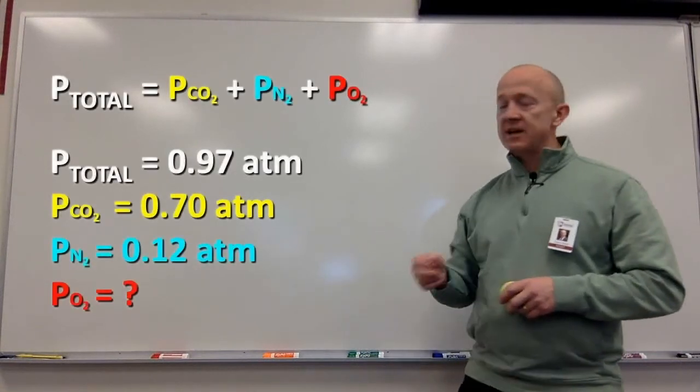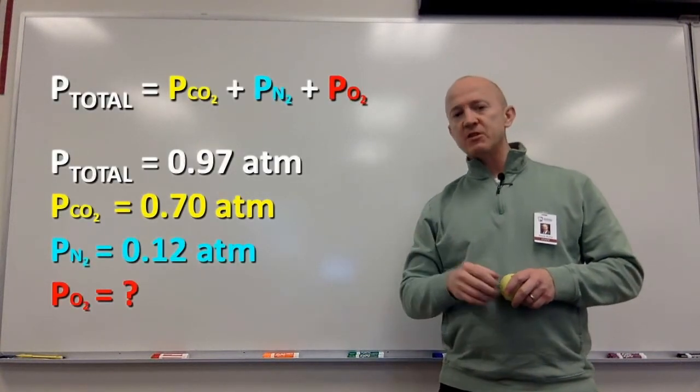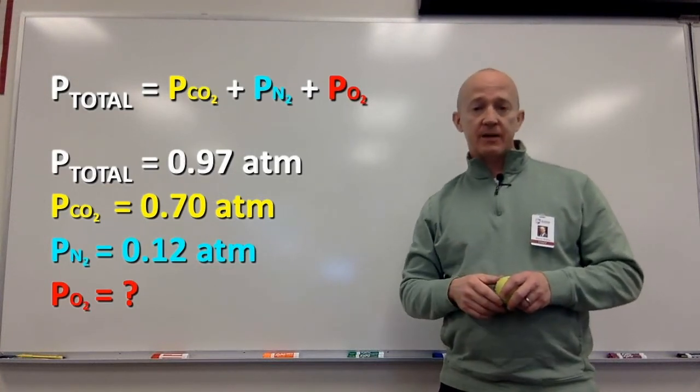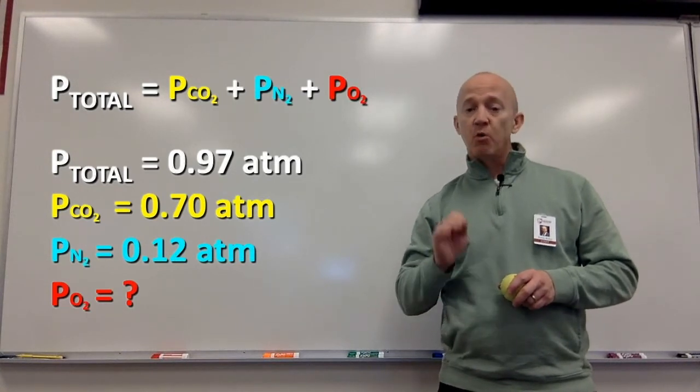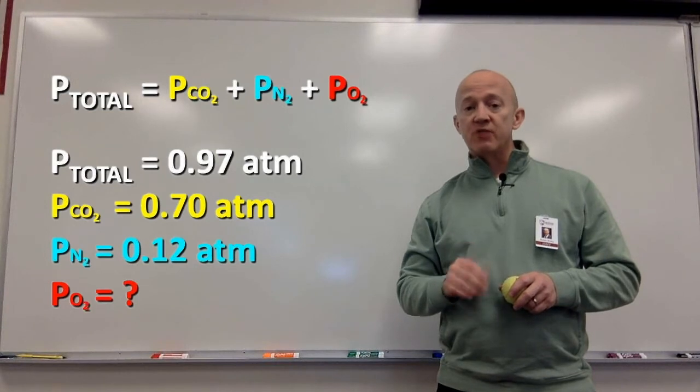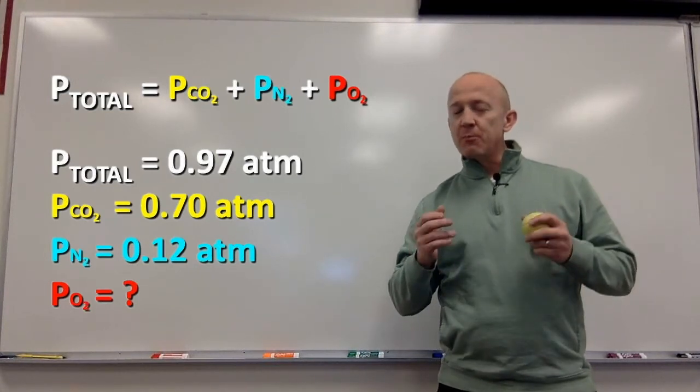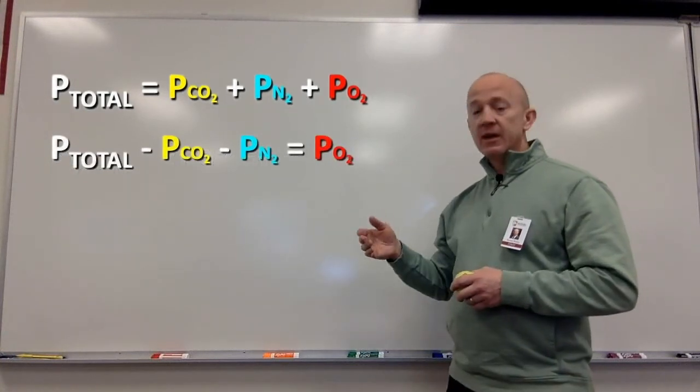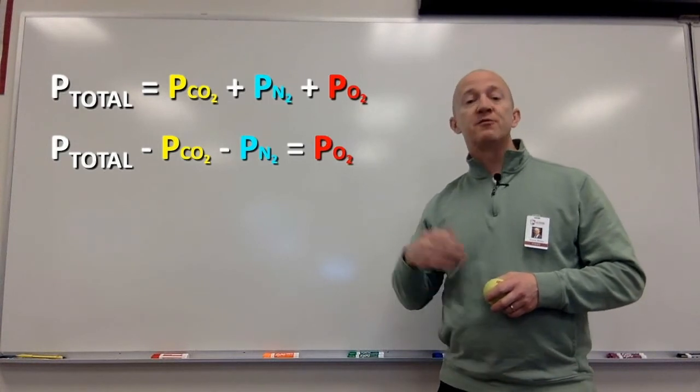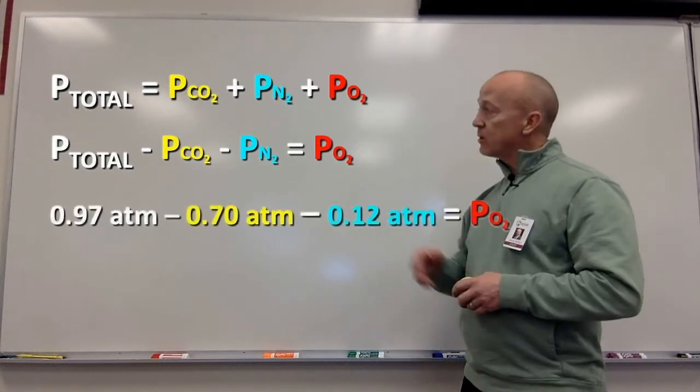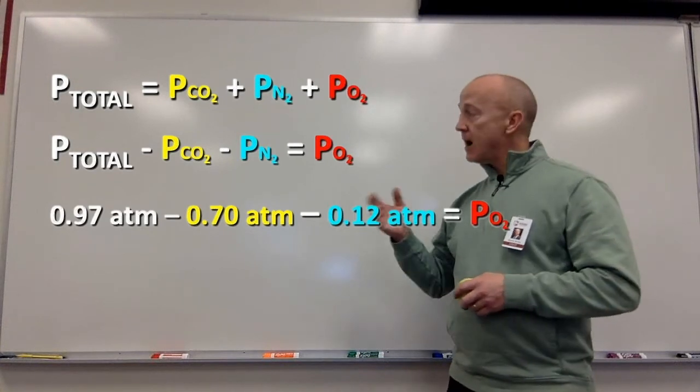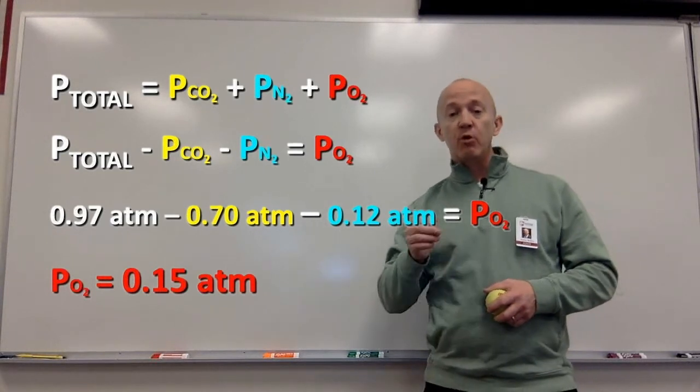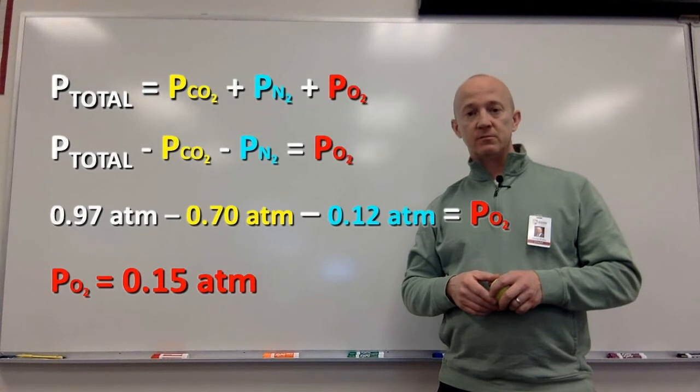Here's an example for you. Let's say we have a mixture of gases that has a total pressure of 0.97 atmospheres. In that mixture of gases we have nitrogen, oxygen, and carbon dioxide. Let's say that the carbon dioxide has a partial pressure of 0.7 atmospheres and the nitrogen has a partial pressure of 0.12 atmospheres. What is the partial pressure of the oxygen? It's really very simple. We'll take the total pressure and subtract the two pressures we know to find the remaining partial pressure of oxygen. So we have 0.97 minus 0.7 minus 0.12, leaving us with a partial pressure of 0.15 atmospheres for oxygen. You get it?